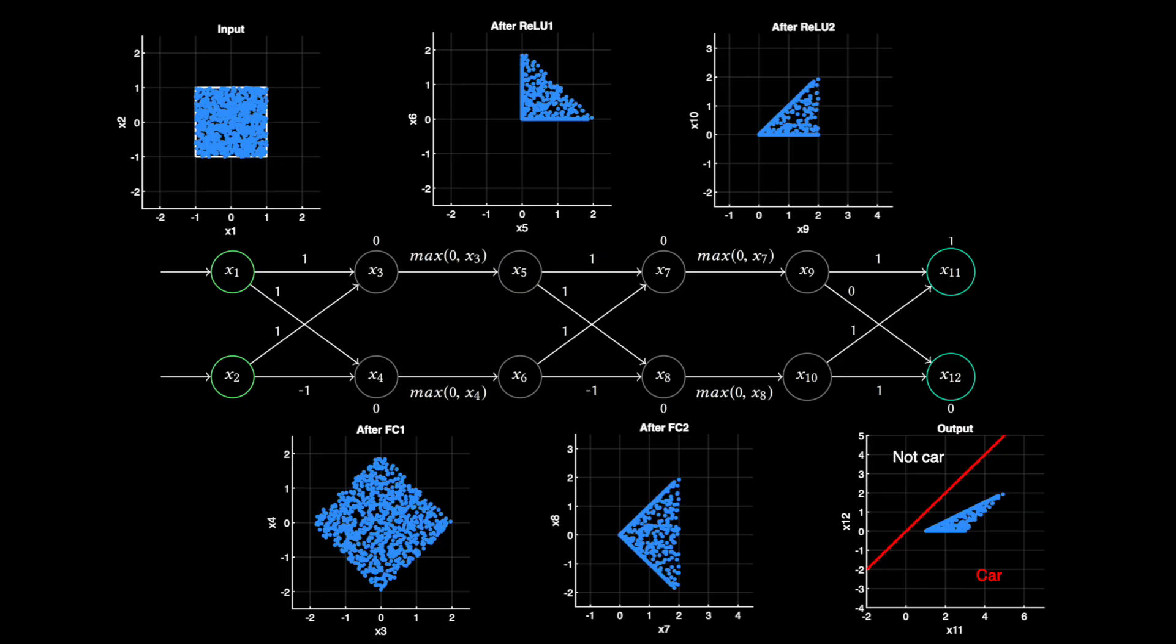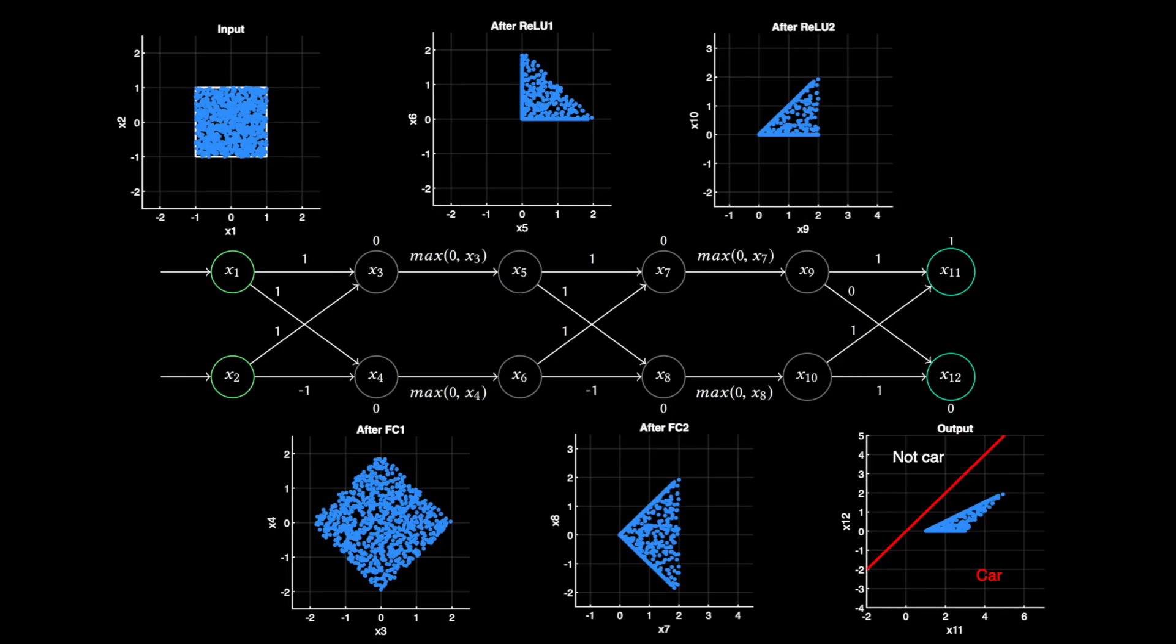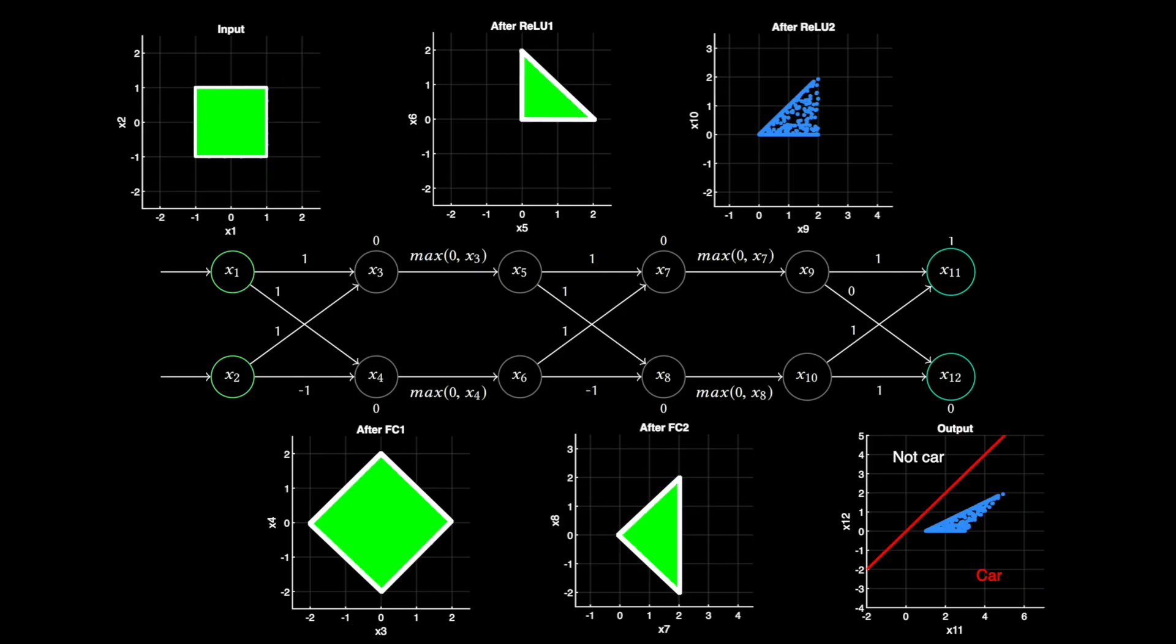So to overcome these two problems, we use formal methods. With this approach, instead of individual points to fill out the input space, we define a region using constraints, and then run those constraints through the network. And there are several ways to do this.